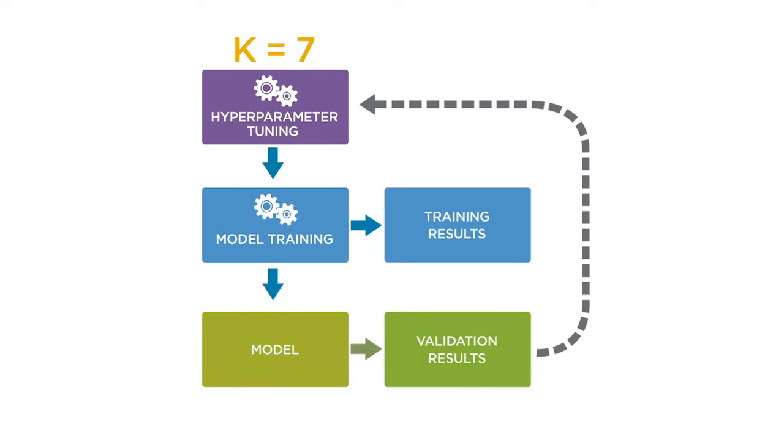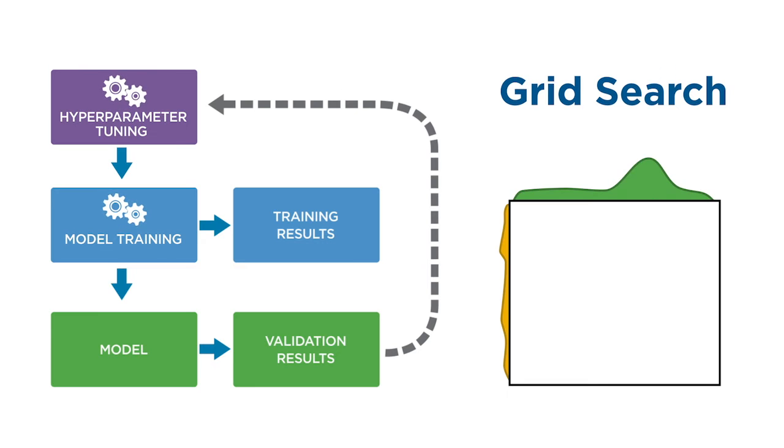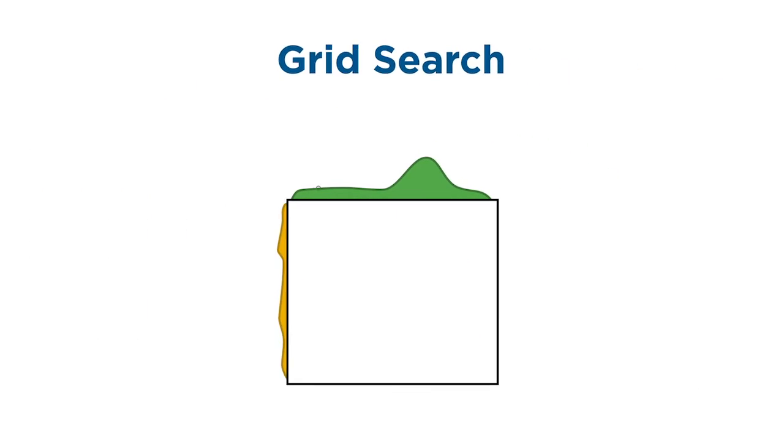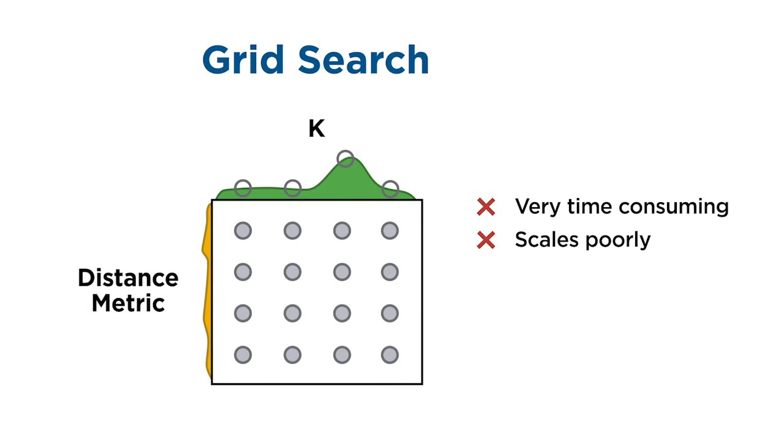Although this optimization could be done with a manual search, it soon becomes a task of trial and error. There are ways to automate it. One approach is grid search, which looks through each combination of hyperparameters. In the case of the KNN example, every combination of values for K and distance metrics would be tried to determine the optimal set of values. However, this approach can be very time consuming and it scales poorly as you increase the number of values.